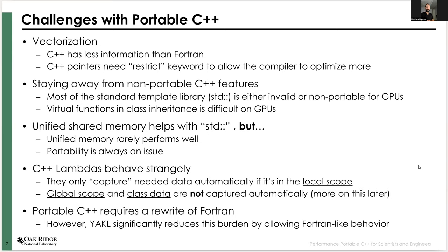C++ lambdas behave oddly — they only capture data from the local scope, not from the global scope or internal class data. This leads to some strange situations where you have to create local references so that the data appears local in scope. You can look at the YACL documentation for a clear description. It requires a rewrite of Fortran code, but using a tool like YACL or Kokkos with Fortran-like behavior makes the porting much easier because the actual kernel code looks no different from the loop code.